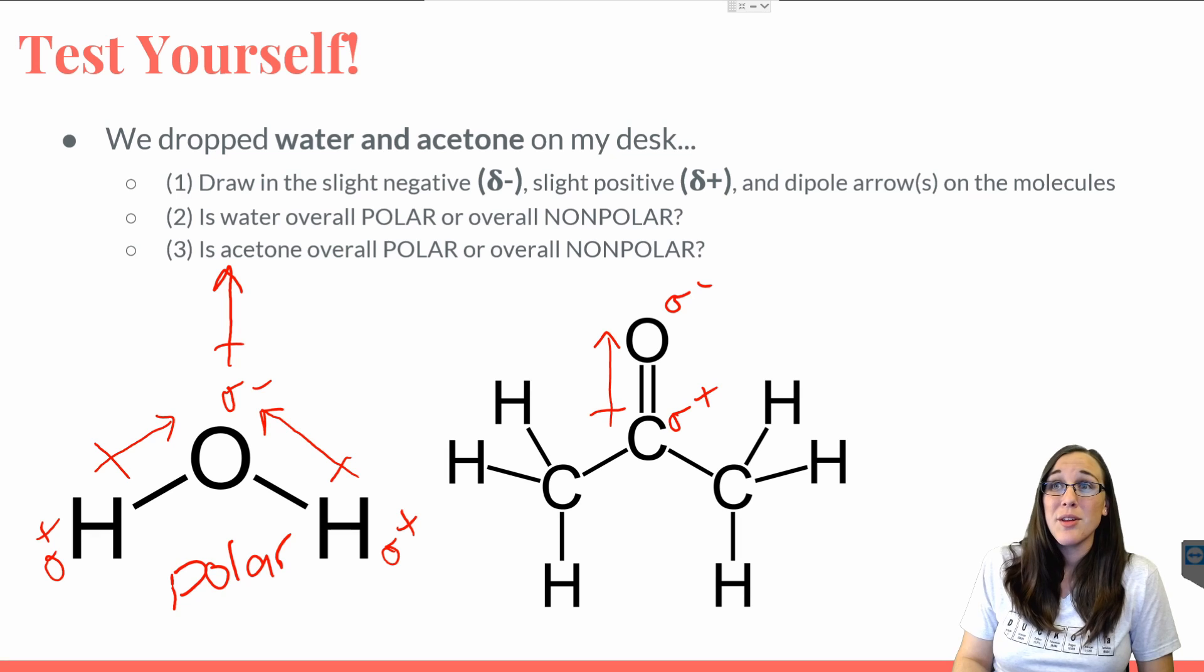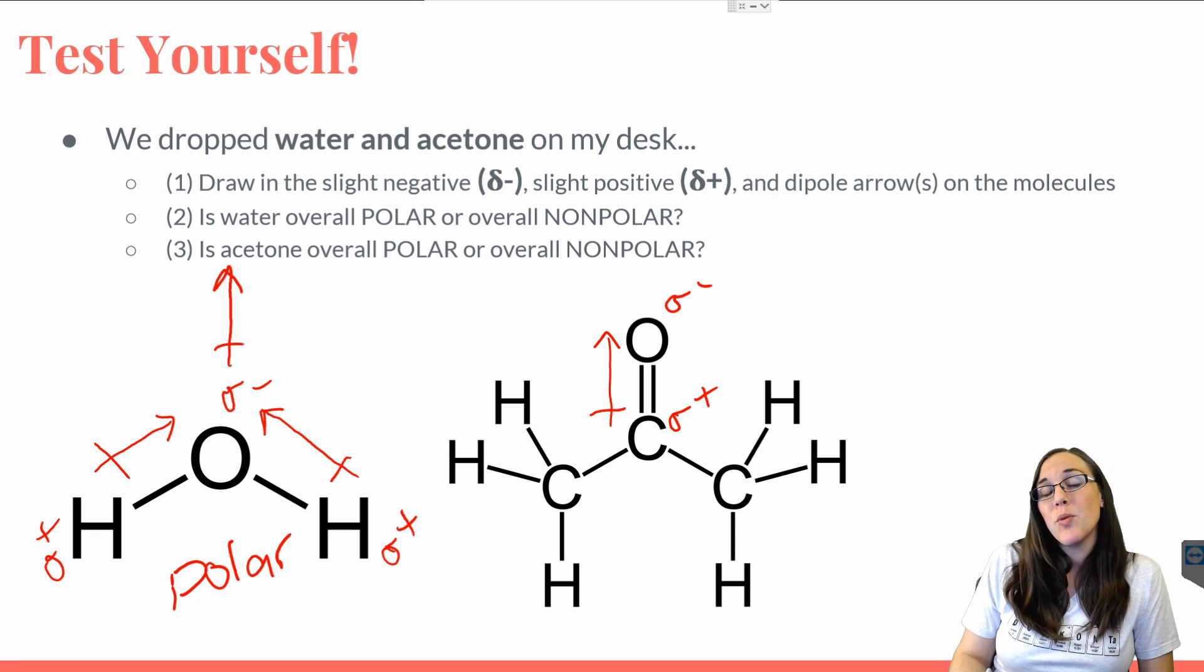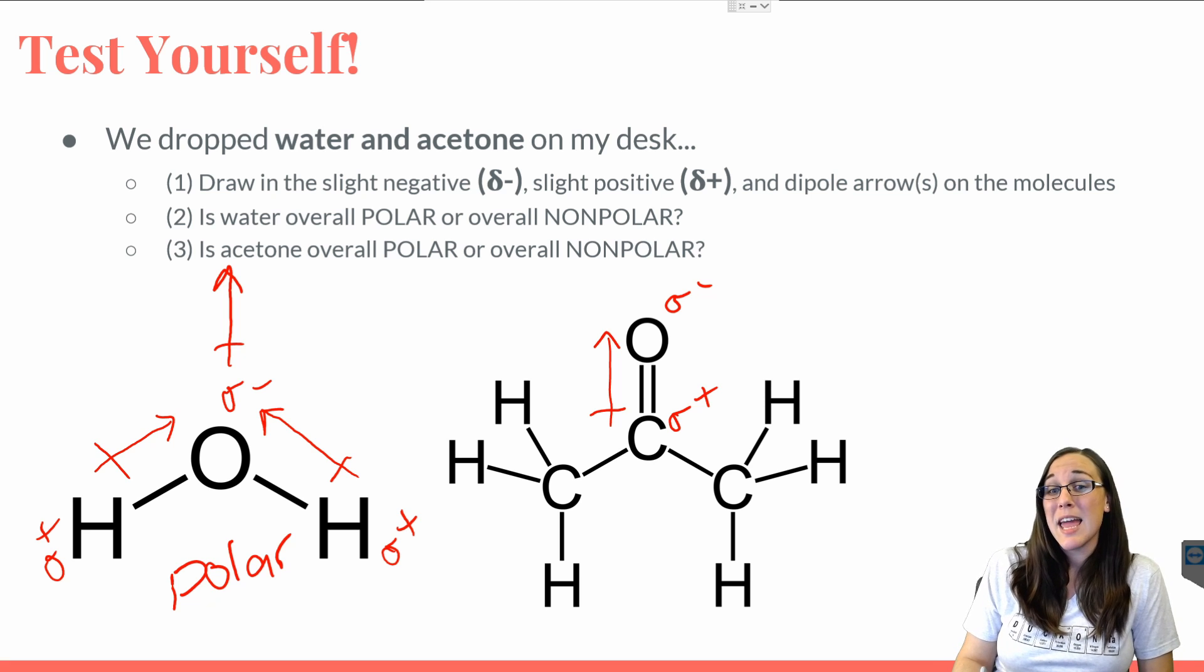Now we also have some other bonds that are the same. So between carbon and carbon, those are the same. That's one of our examples of a nonpolar bond. So we can't draw a dipole arrow for carbon-carbon bonds, because it's the same atom.